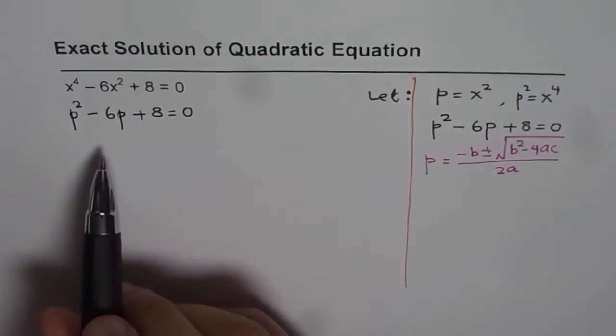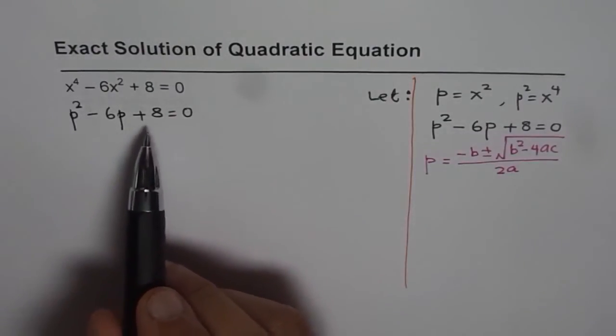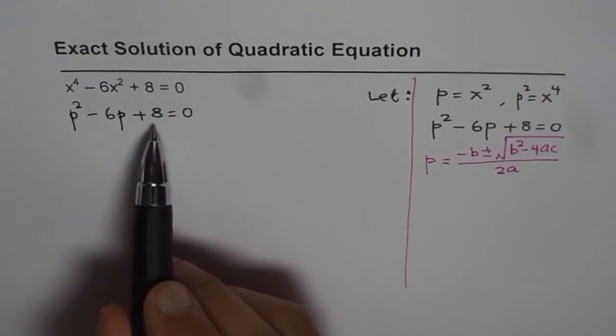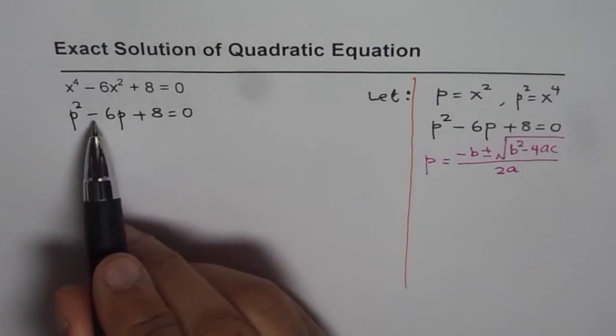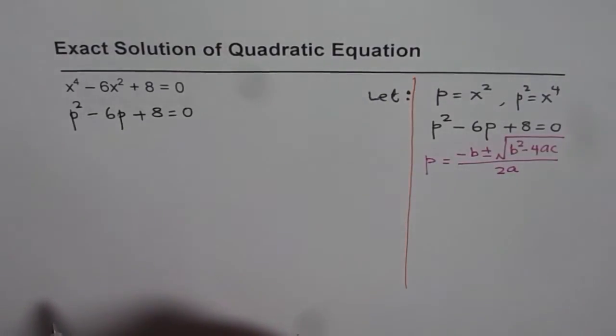Now, to solve this, well, in this case, we can factor it. 8 is 4 times 2. Since 8 is 4 times 2, and 4 and 2 will give us 6, we can actually factor this one.